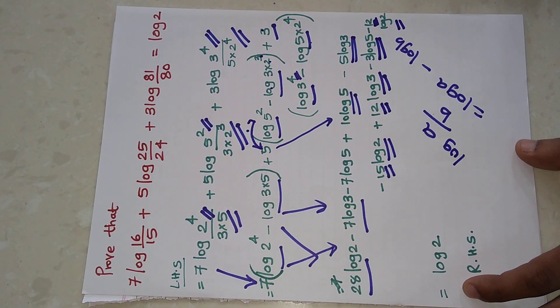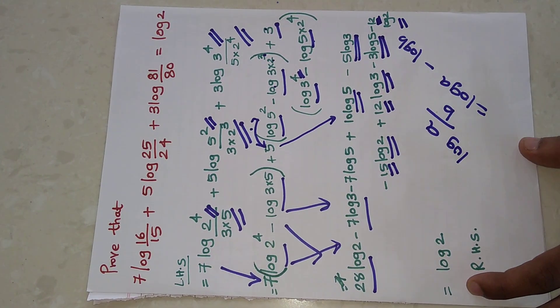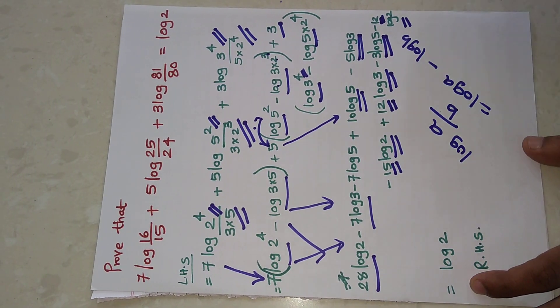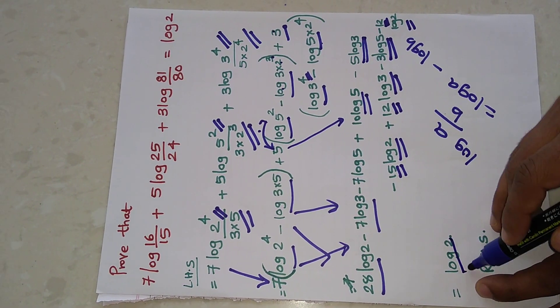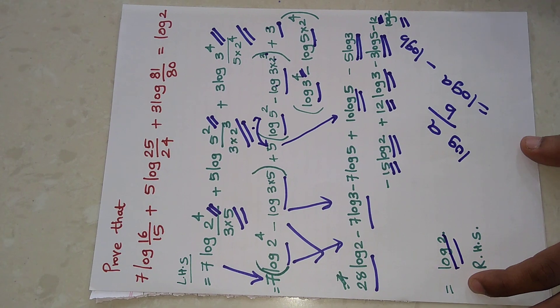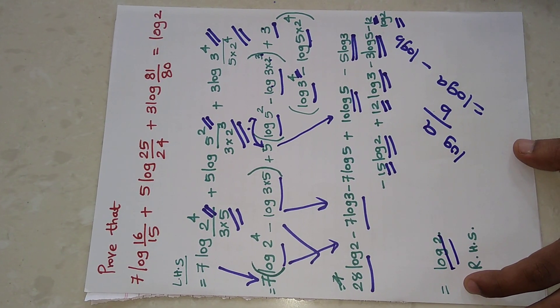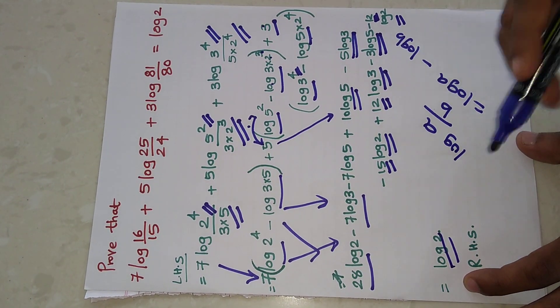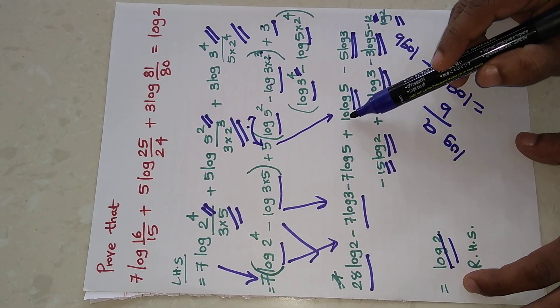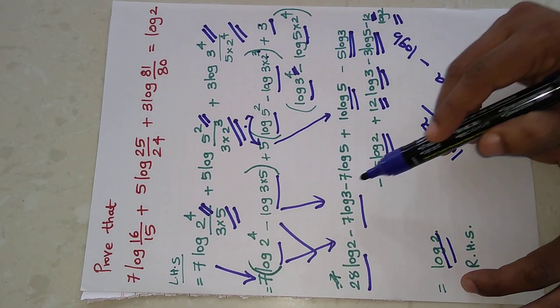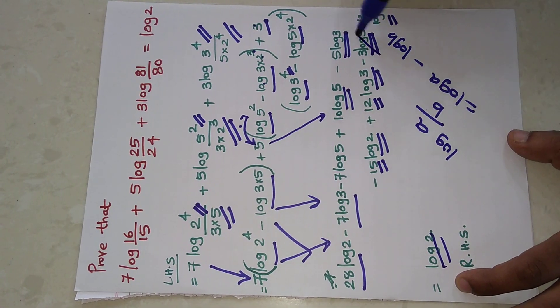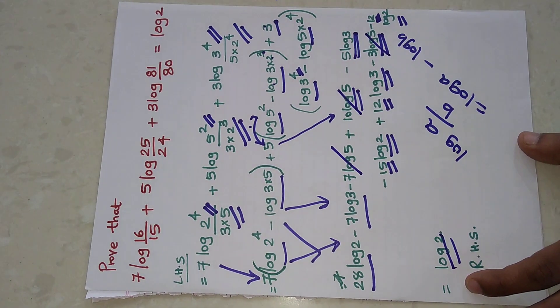At the end we will get only log 2. So first of all, we will start with the cancellation. What we have is 10 log 5, so minus 7 minus 3 - these will get cancelled out. That is the first.